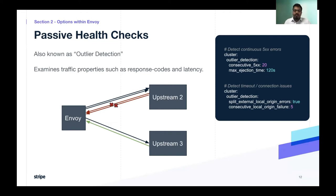The primary difference between active and passive health checks is that active health checks require Envoy to make extra calls along with regular data plane traffic. But in passive health checks, Envoy doesn't use extra network bandwidth to figure out if the upstream is healthy or not.